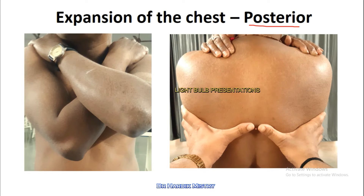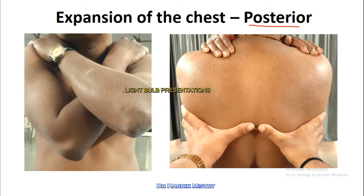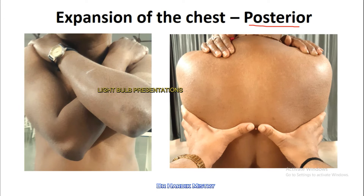Meanwhile, note whether the movement of both thumbs is bilaterally symmetrical or not. If you find that one thumb movement is more than the other, that means expansion of the chest is normal on one side, but on the opposite side there is reduced or abnormal expansion of the chest.